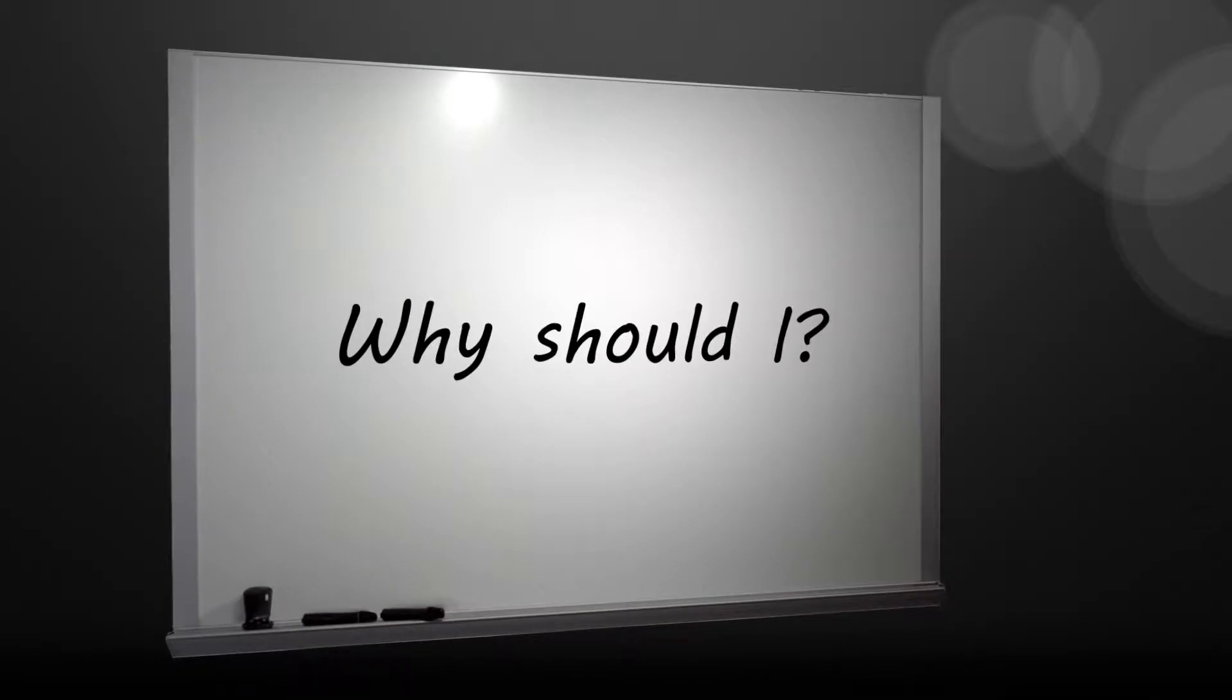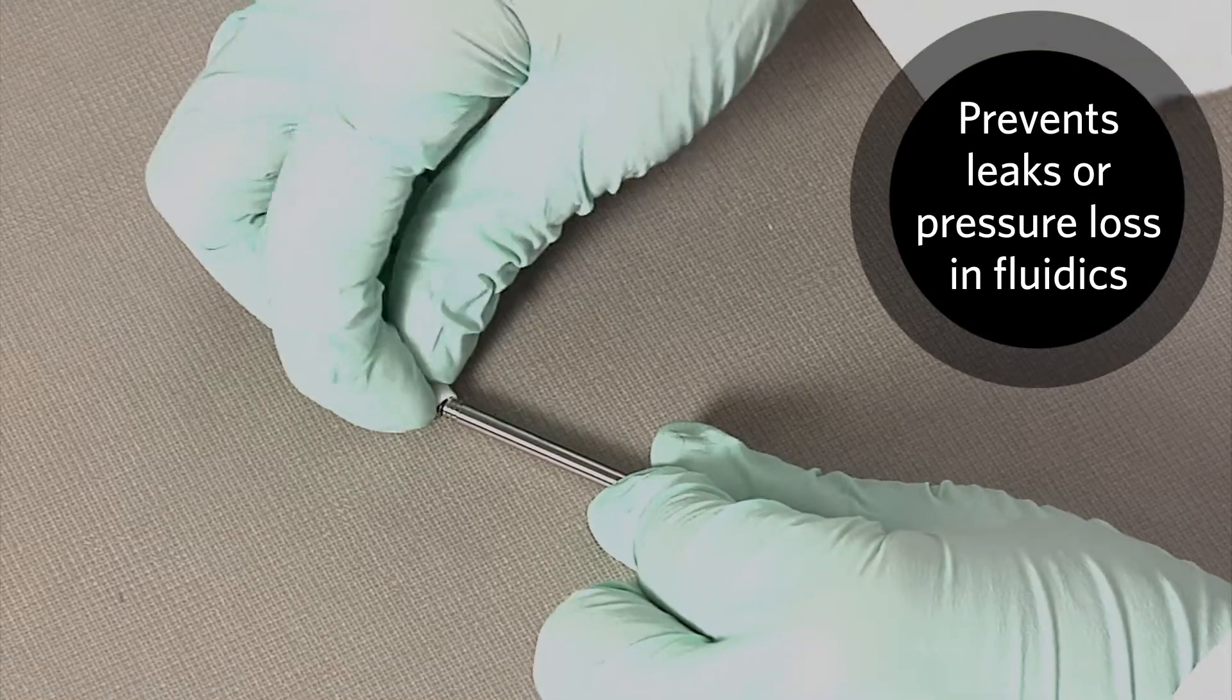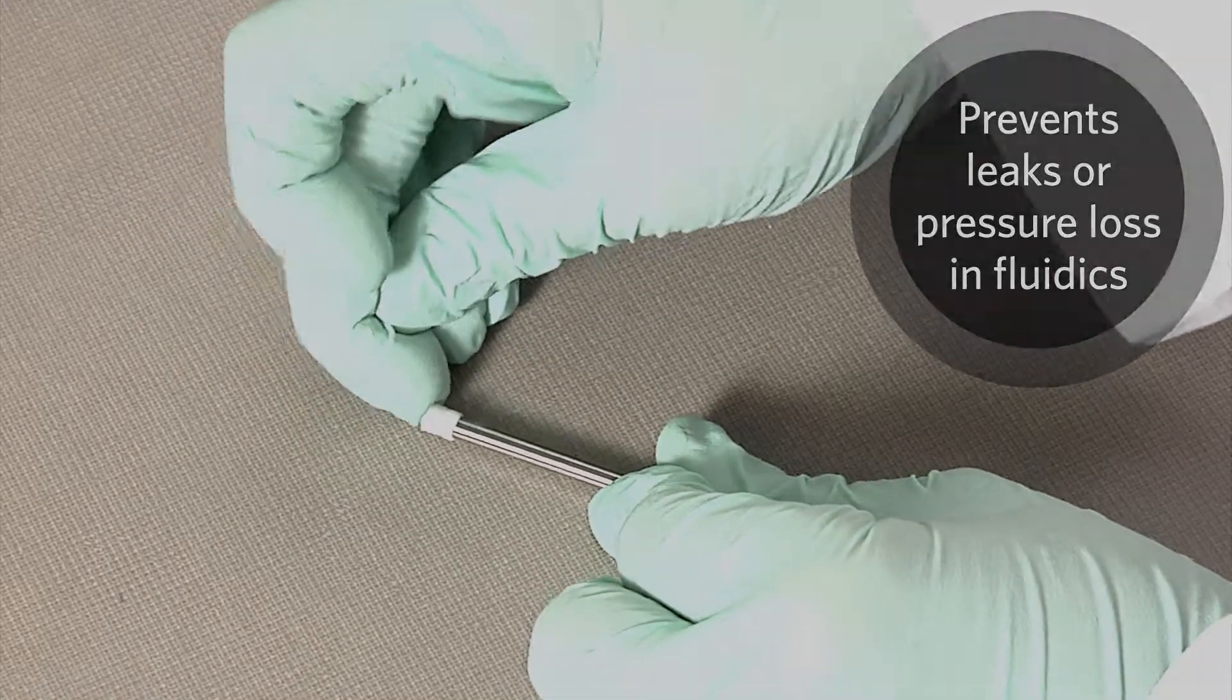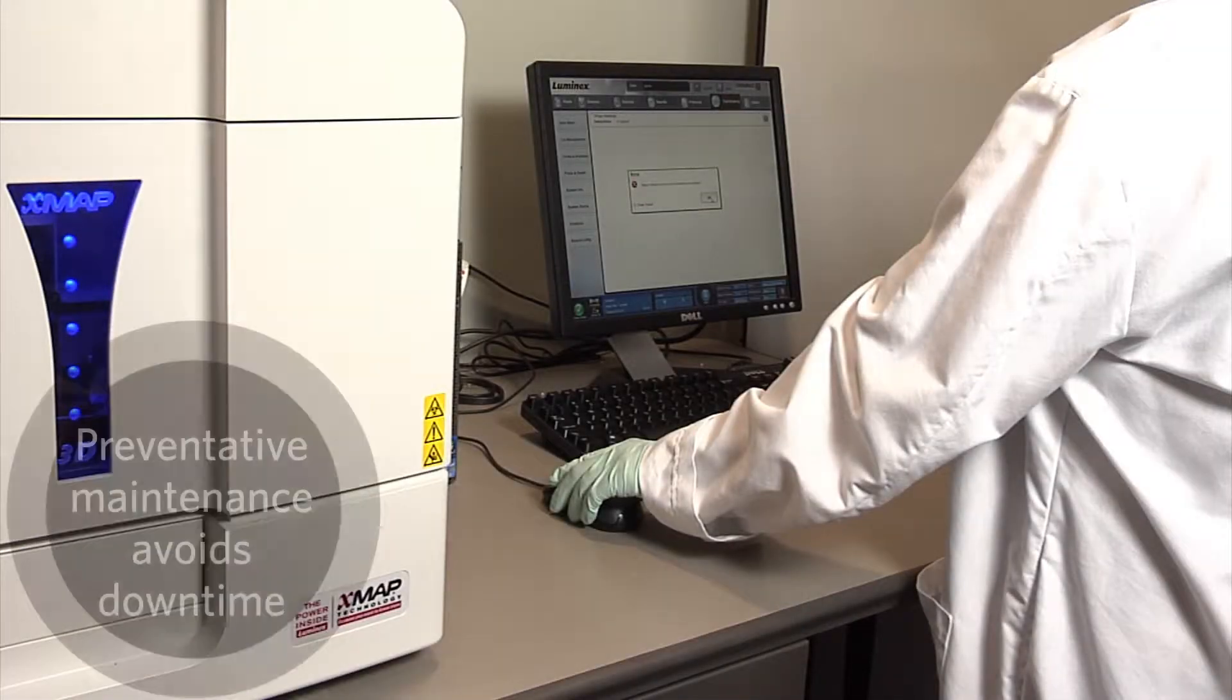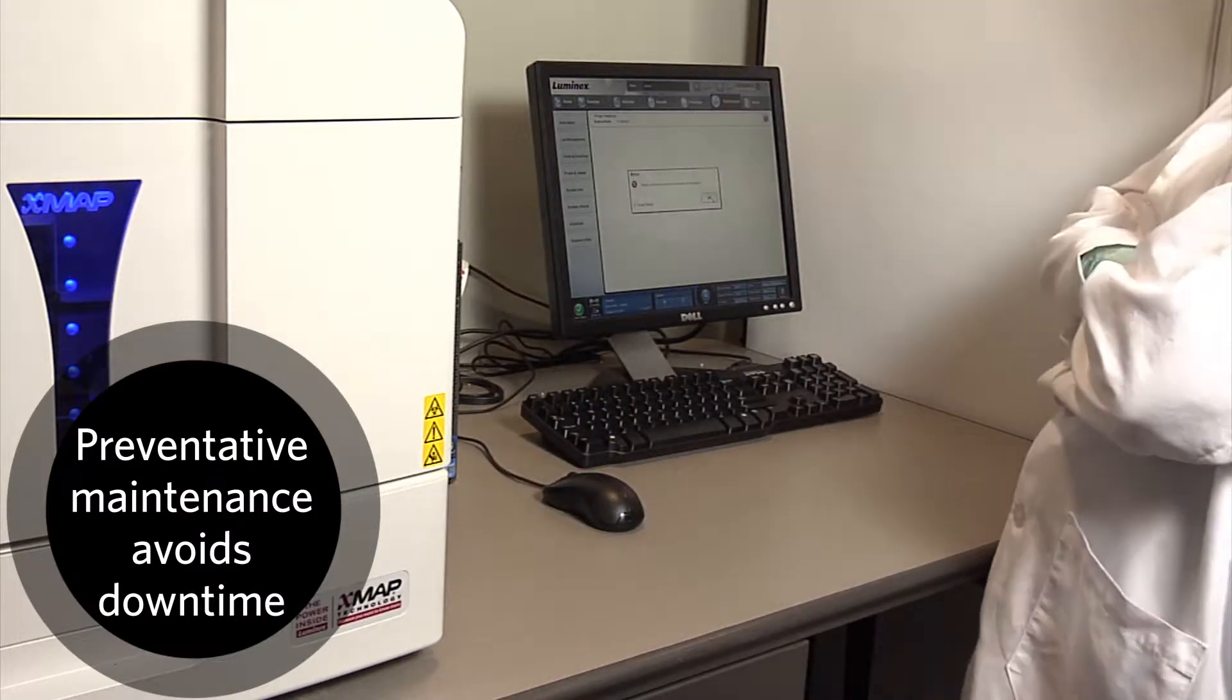Why should I replace the syringe seal? Replacing the seal will prevent leaks or pressure loss in the fluidic system. This is a preventative maintenance procedure to avoid any downtime on the FlexMap 3D instrument.